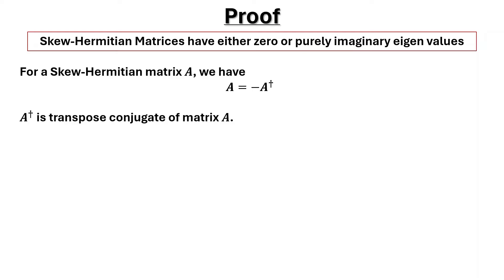So let us proceed. For a skew Hermitian matrix A, we have A is equal to minus A dagger, where A dagger is transpose conjugate of matrix A.